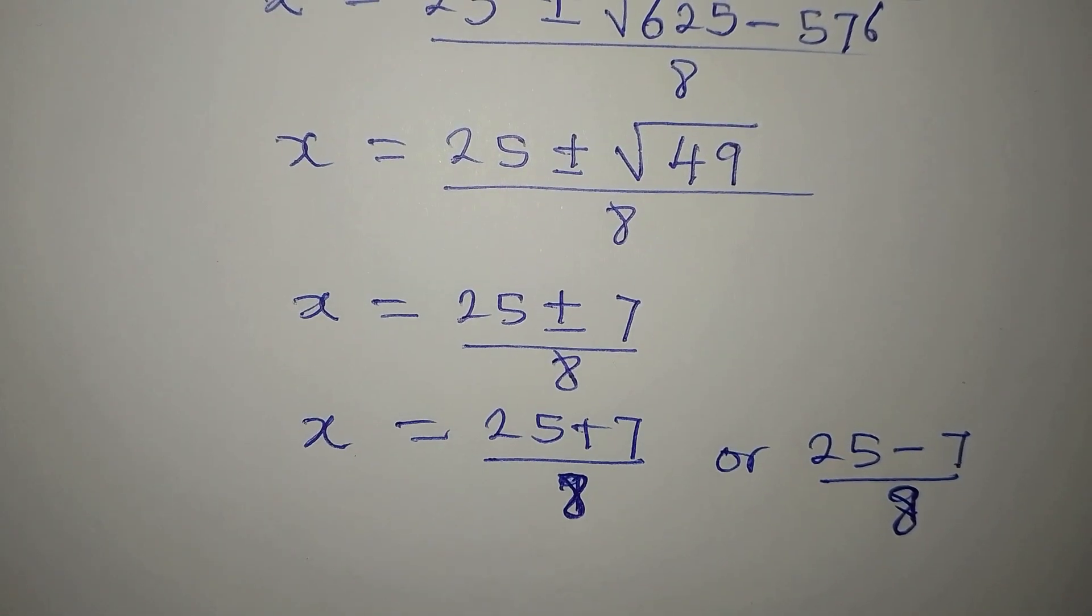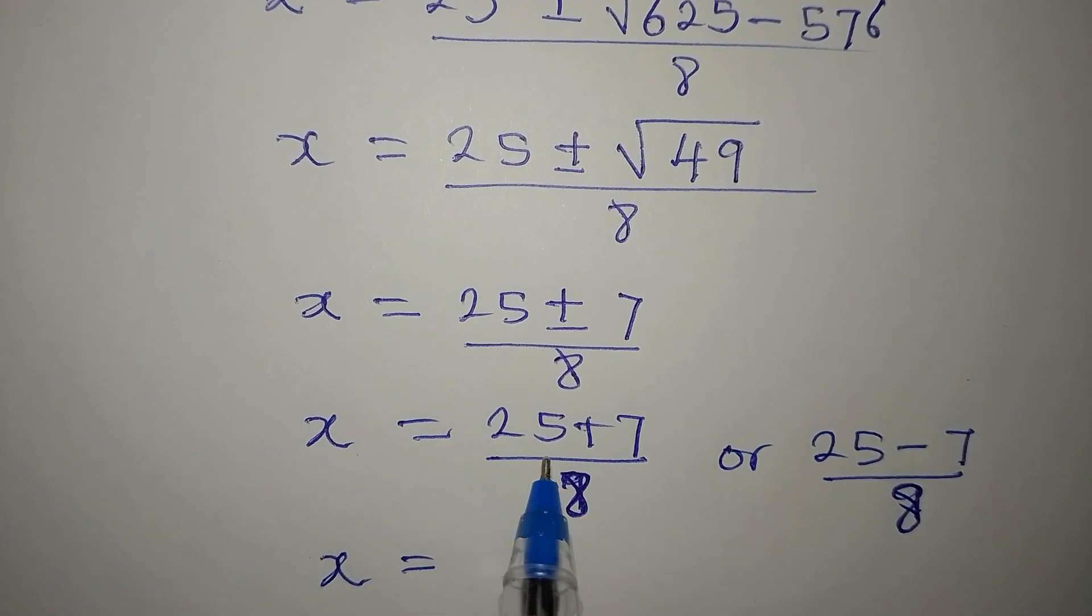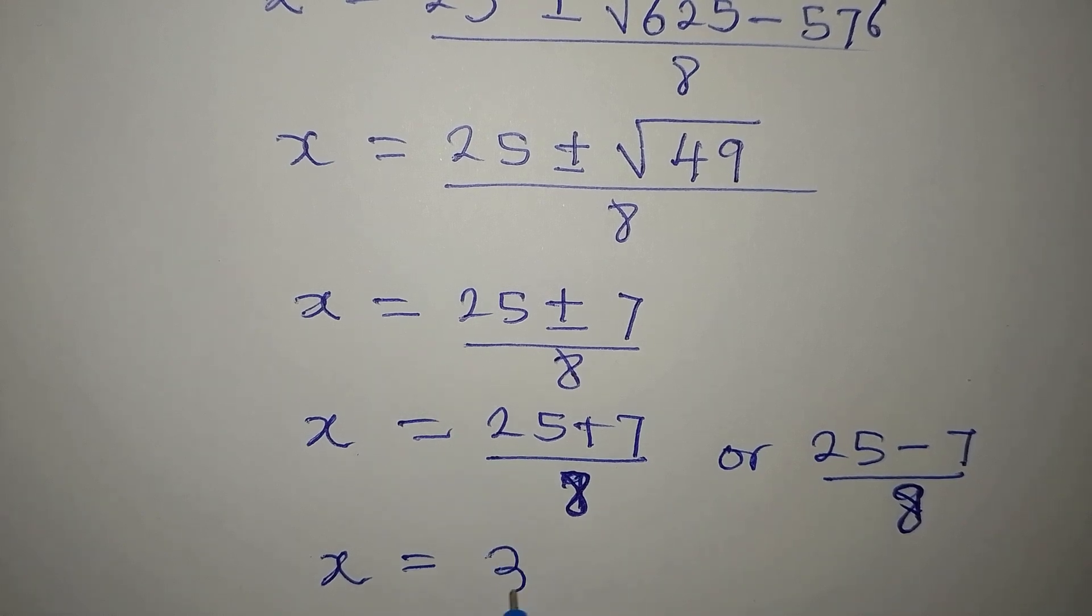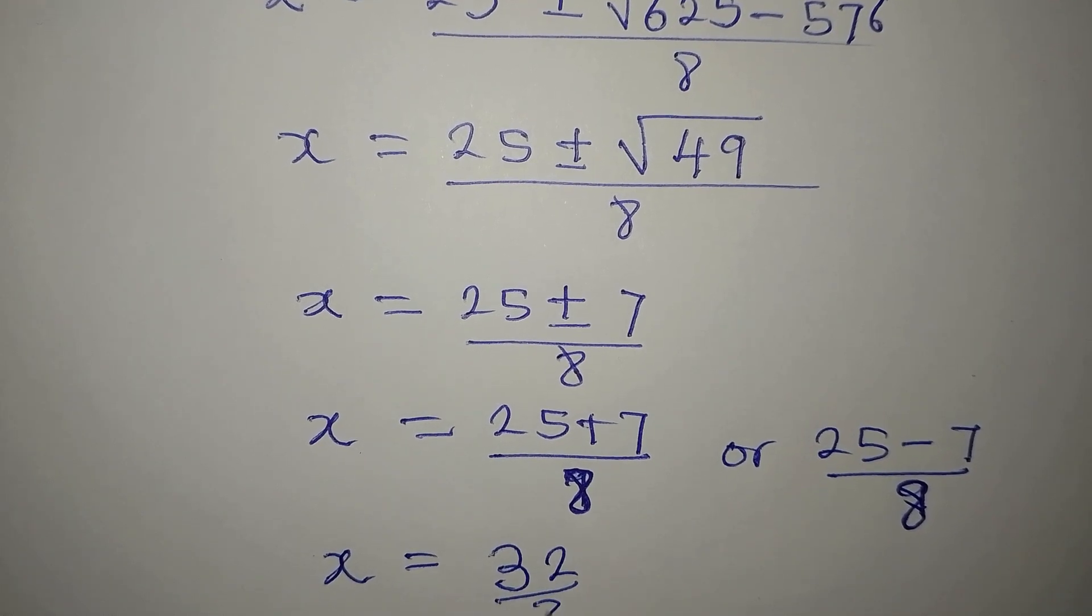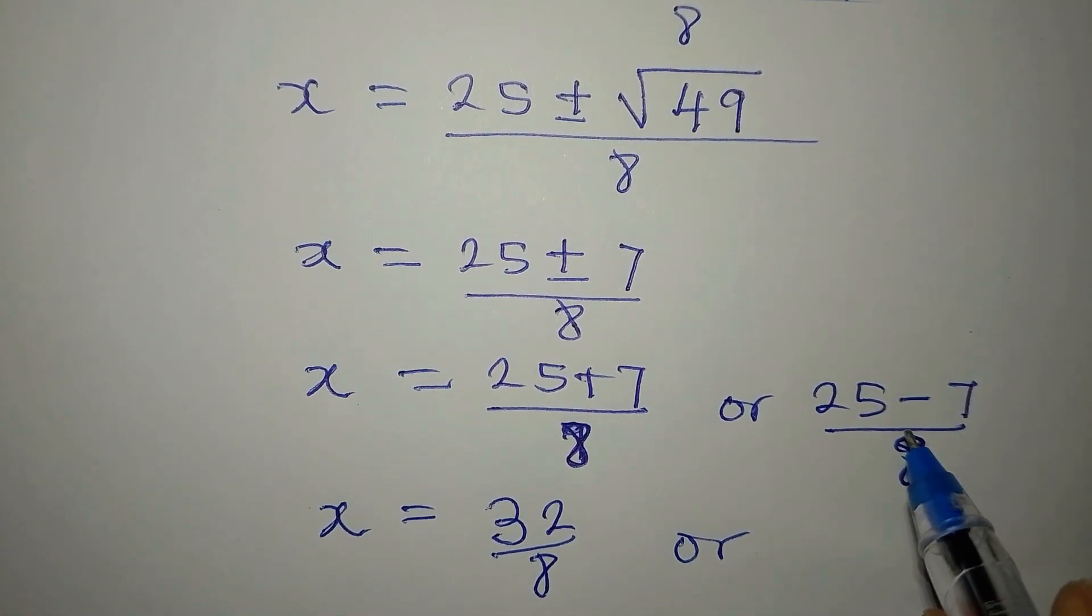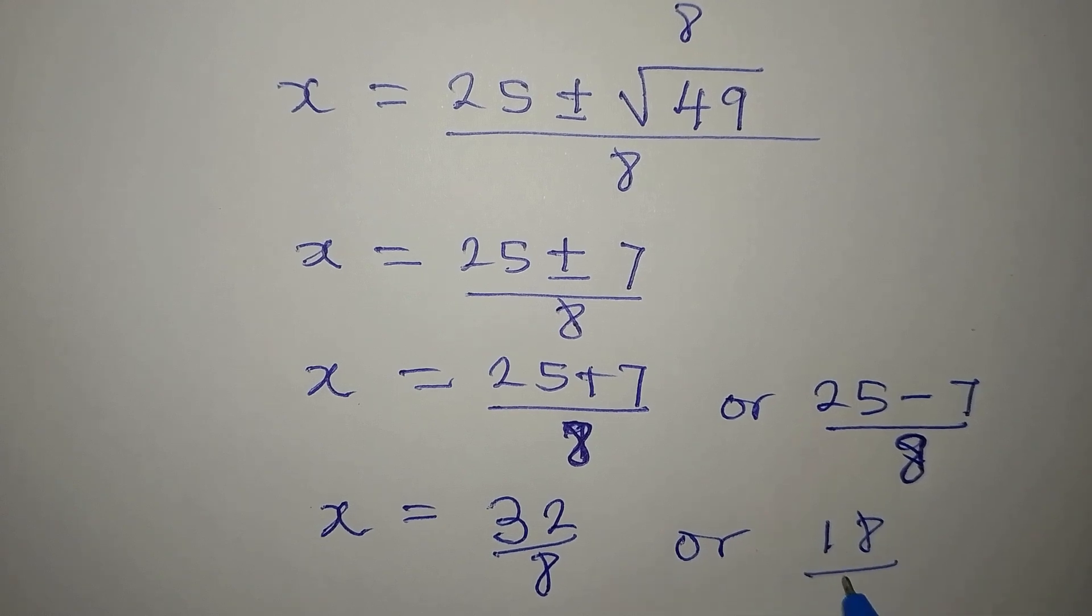So let's continue. So that x will be equal to 25 plus 7 is 32 over 8, or on this side, 25 minus 7 is 18 over 8.